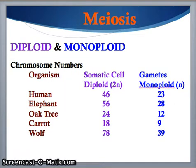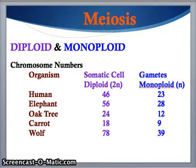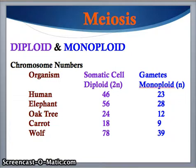Looking at different organisms and their diploid and monoploid numbers: in every human somatic cell, the diploid number is 46 chromosomes, coming from two gametes each with the monoploid number of 23. An elephant has a diploid number of 56 and a monoploid number of 28. An oak tree's somatic cells have 24 chromosomes while its gametes have 12. A carrot has a diploid number of 18 and a monoploid number of 9.